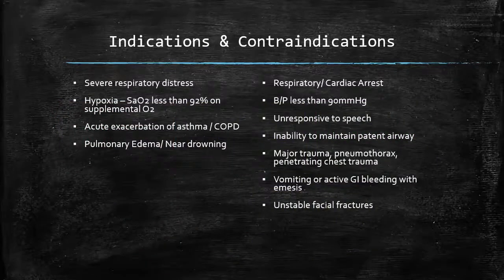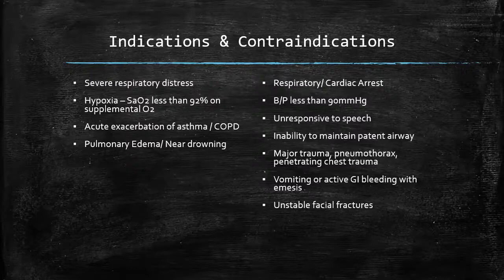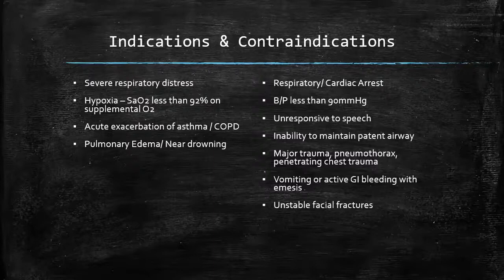Let's talk about indications and contraindications for CPAP usage. When it comes to contraindications, if the patient meets any one of them, they are automatically not a candidate for CPAP. Conversely, the patient does not need to meet all of the indications to be a candidate. The first indication is severe respiratory distress — a broad statement, since multiple things can cause respiratory distress. The second is where a lot of people get hung up: hypoxia despite supplemental oxygen, essentially a pulse oximetry of 92% or lower despite having supplemental oxygen applied, which makes them a candidate for CPAP.